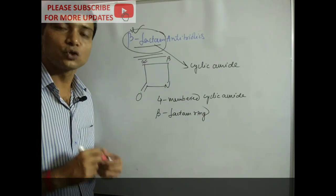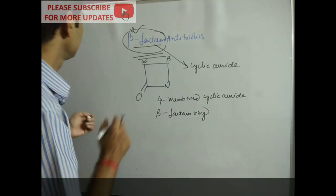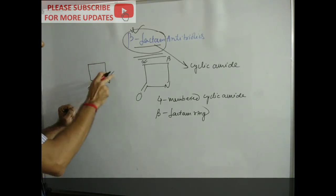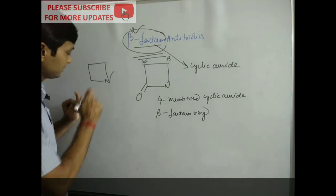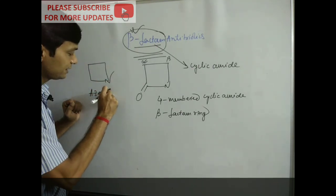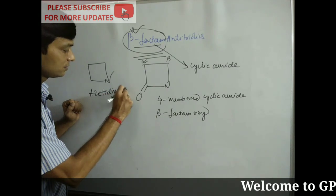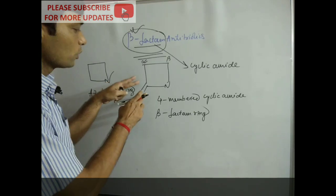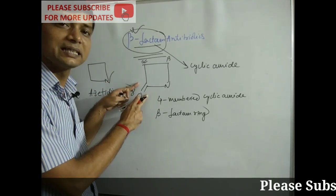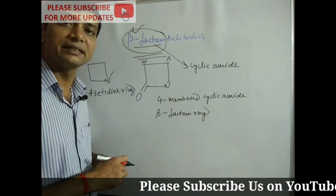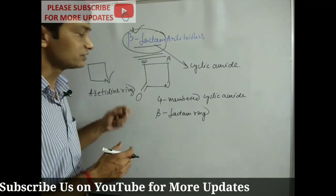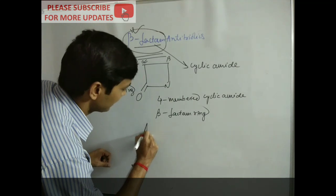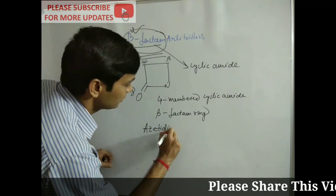One thing you should know about this: a four-membered ring containing one nitrogen is called the azetidine ring. One keto group is present in this azetidine ring, and that is why this ring is also known as the azetidine ring.